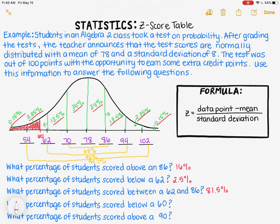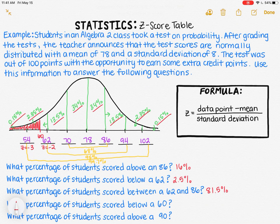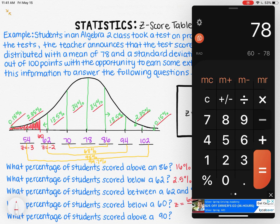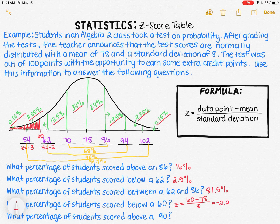Z-scores tell us the number of standard deviations above or below the mean a data point is. For example, 62 is two standard deviations below the mean, so its Z-score is negative 2. And 54 is three standard deviations below the mean, so its Z-score is negative 3. The Z-score for 60 must be between negative 2 and negative 3. Using the formula: Z equals 60 minus the mean of 78, divided by the standard deviation of 8. That gives me negative 2.25, so 60 is 2.25 standard deviations below the mean.